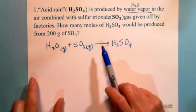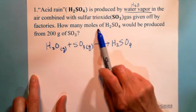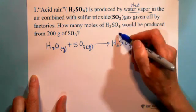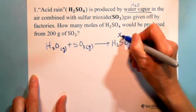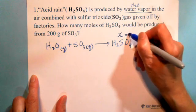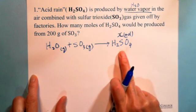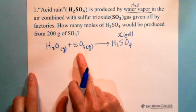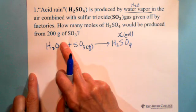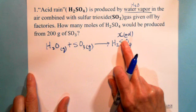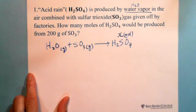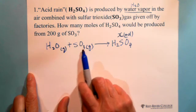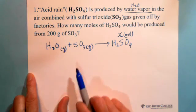That's easy for us because we're looking for how many moles of H2SO4 — we put a question mark or call it X. We're looking for X moles. We don't know how many moles will be produced. We're given 200 grams of SO3, but we're looking for moles, so the units don't match. We need to convert 200 grams of sulfur trioxide to number of moles.